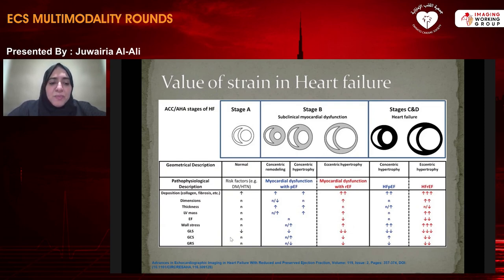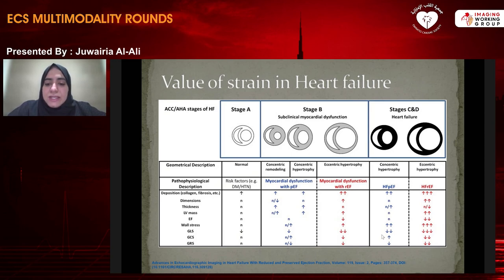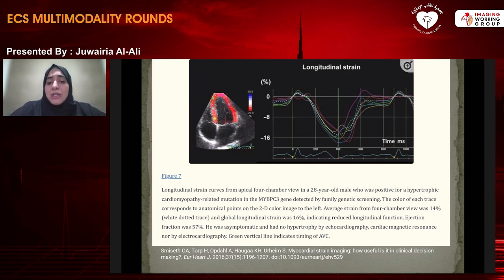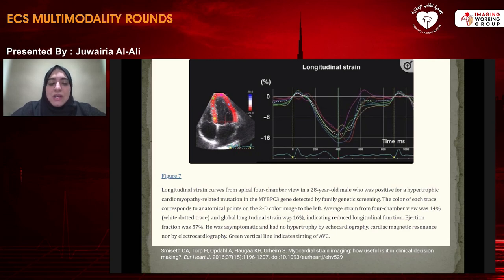This is a case report of a 28-year-old patient who underwent echo for screening for hypertrophic cardiomyopathy because he carries the gene as part of family screening. He had no symptoms of heart failure and no thickened ventricle. Despite that, his GLS was reduced at 16%, showing that even asymptomatic patients without hypertrophy on echo or CMR can have reduced GLS, indicating risk of developing heart failure.